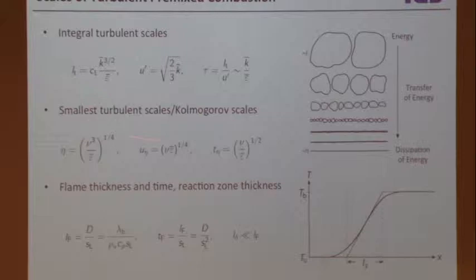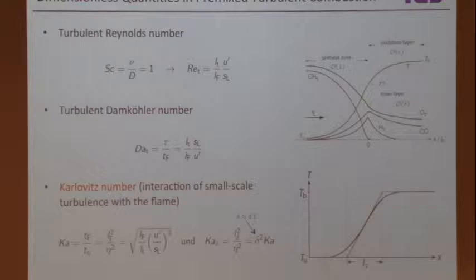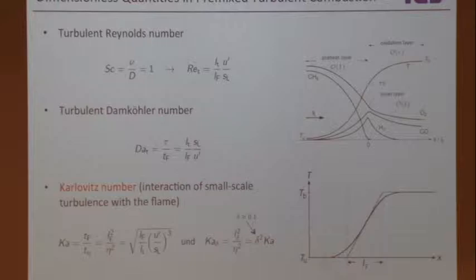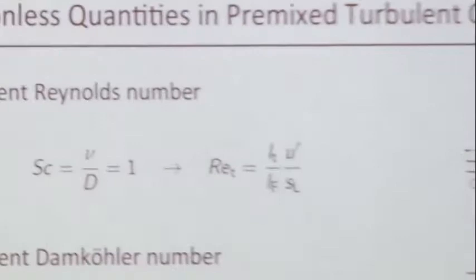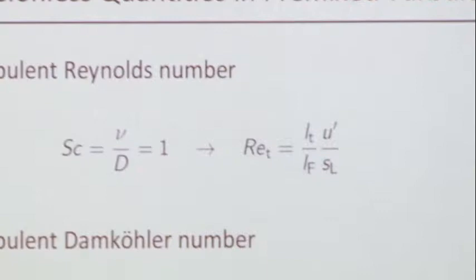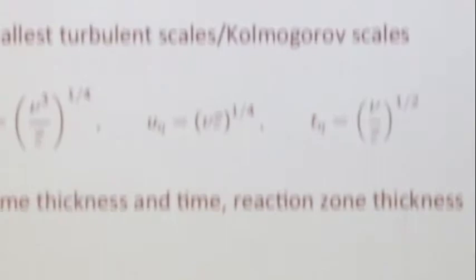The Schmidt number is nu divided by D. We assume it equals 1, so we can replace nu by D and vice versa. The turbulence Reynolds number is L_T times U prime divided by nu. Since nu equals D, and D equals L_F times S_L, we can write the Reynolds number as L_T U prime divided by L_F times S_L.